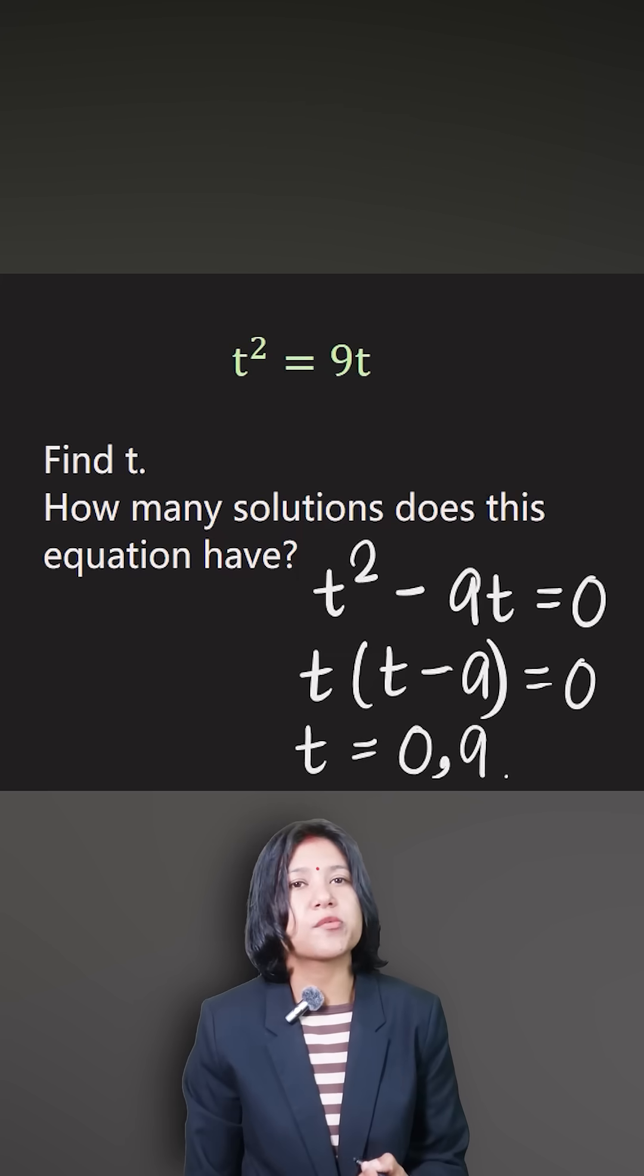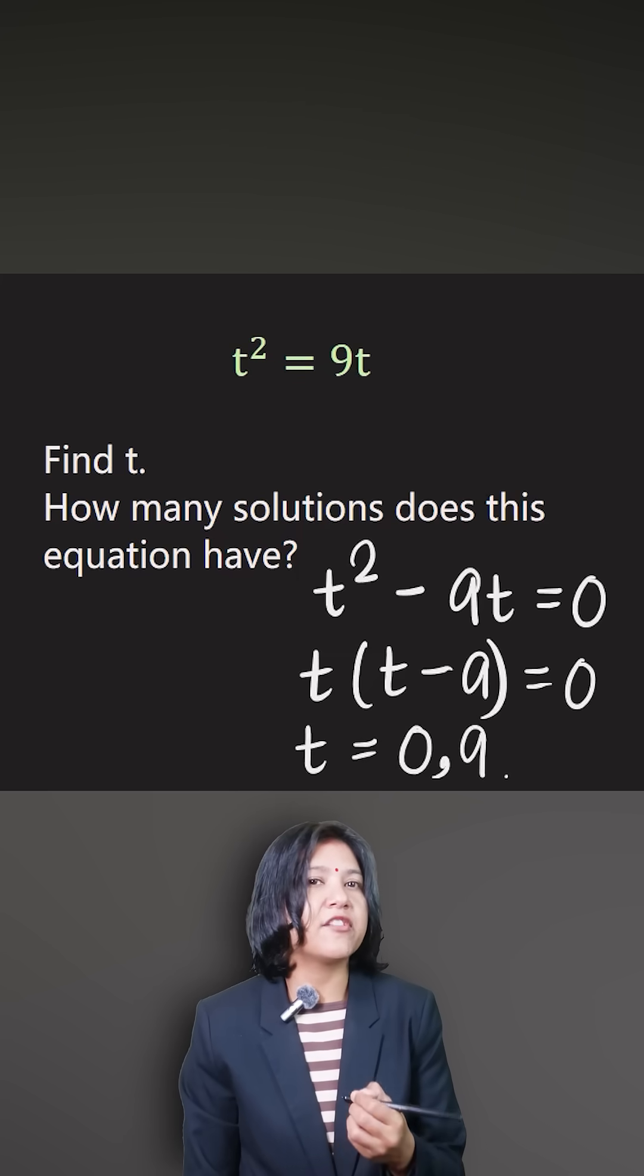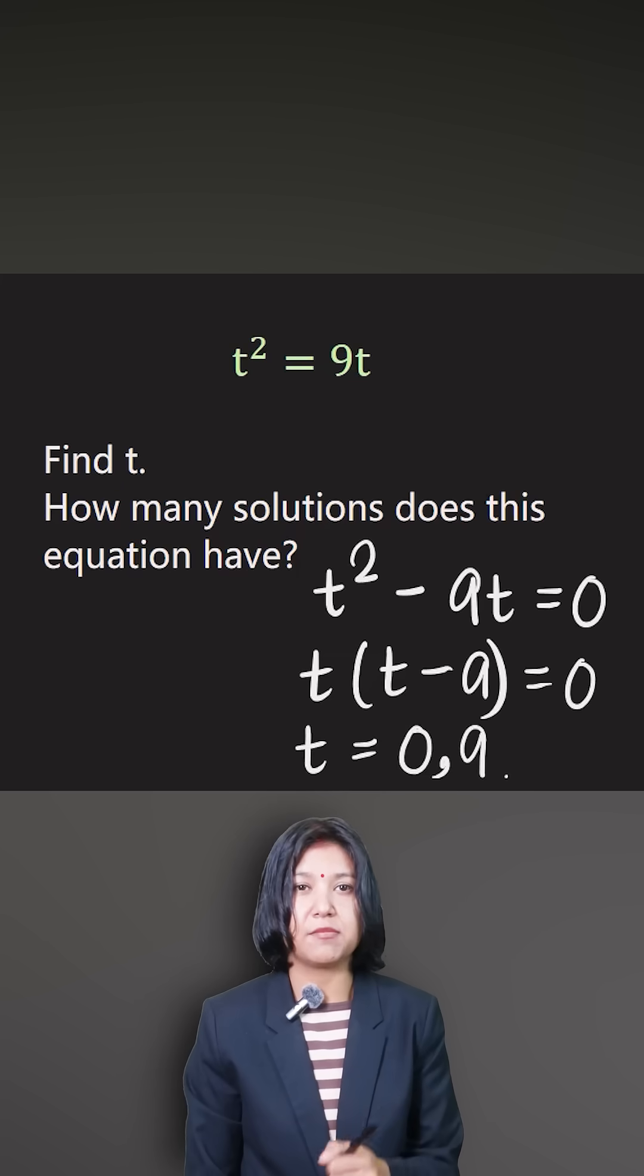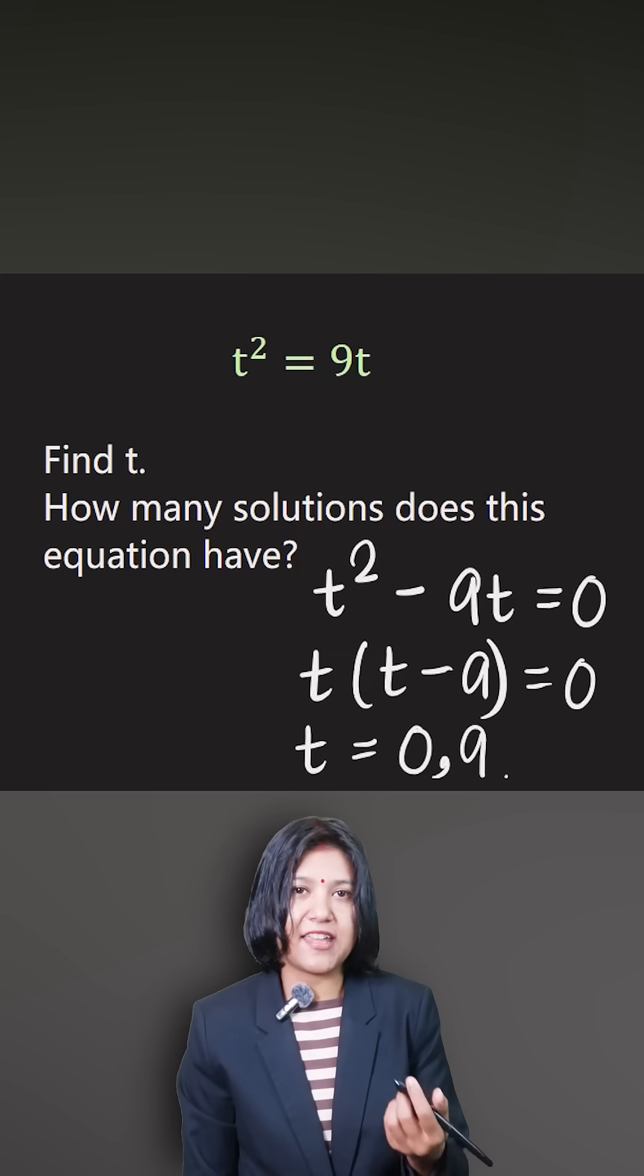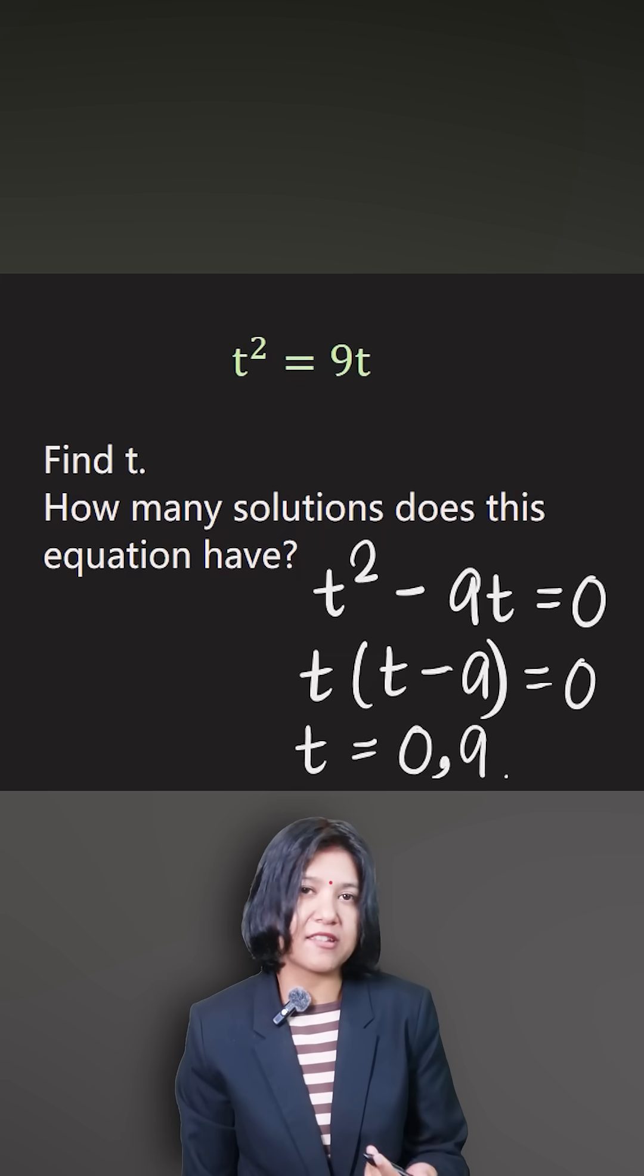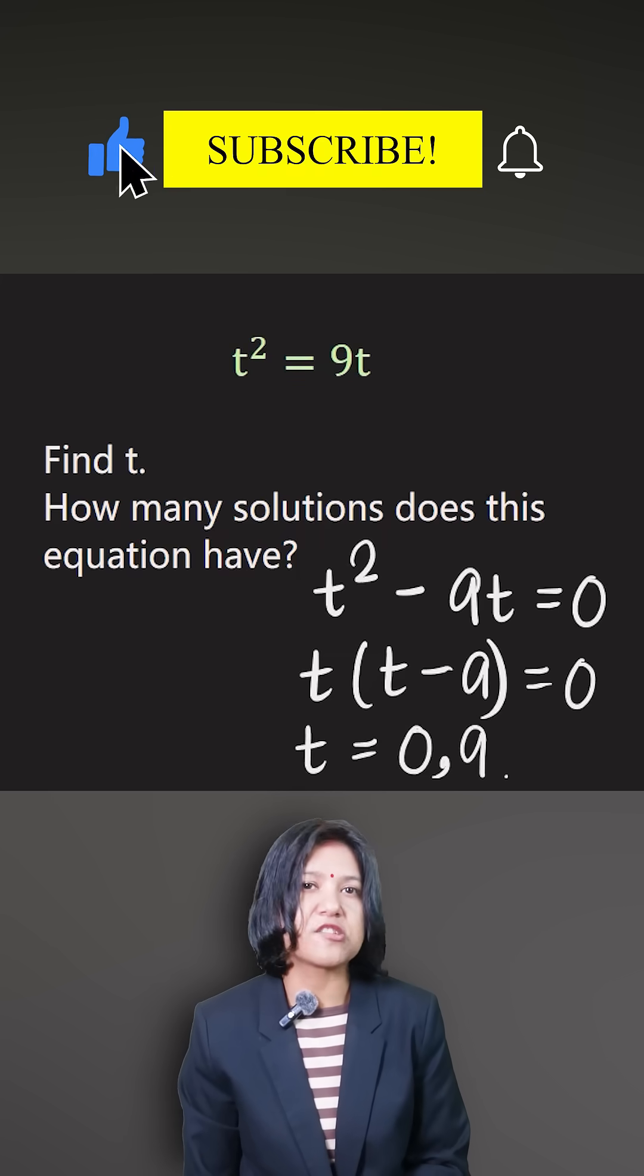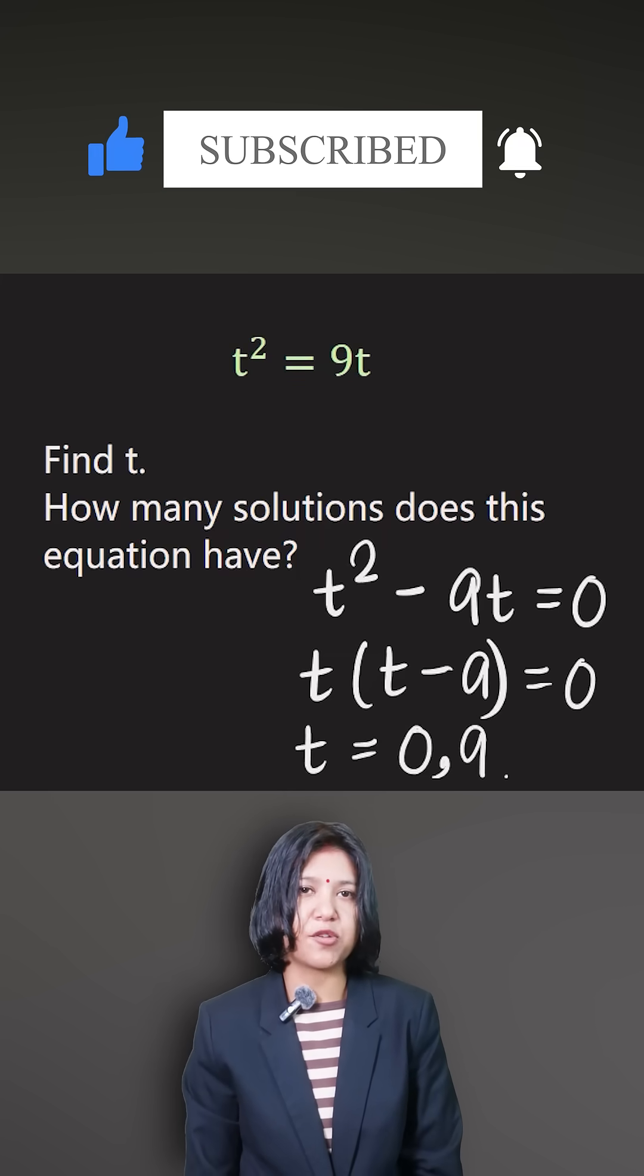So you should always approach this way. Because remember, if you have the variable common on both sides, don't ever go ahead and cancel out the variable term because you're violating the rule of mathematics by saying that if the variable is zero, you're dividing by zero, which is not possible. Hence, this is how you follow.